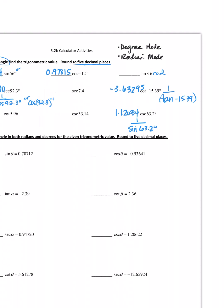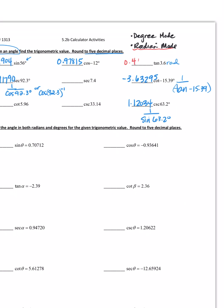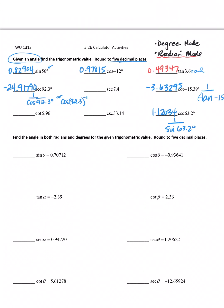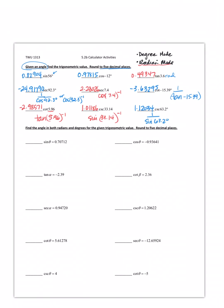Now I go back and put it in radian mode, so I'm going to do these in red for radian. If it's radian mode, tangent 3.6, you can put it in just the way it looks - 0.49347. Secant is inverse cosine, so I can do cosine of 7.4 to the negative 1, I get 2.28026. Tangent of 5.96 radians is negative 2.98571. Cosecant is the inverse of sine, I get 1.01186.